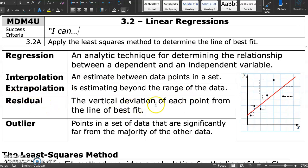A residual is the vertical deviation of each point from the line of best fit. If you look at this line of best fit and this point, the residual is this vertical distance. This will be a helpful quantifiable measure for the distance of a point from the line.